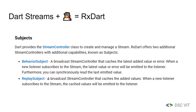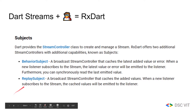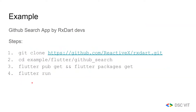RxDart adds two more stream controllers. Dart provides a stream controller, but RxDart adds two more to it. BehaviorSubject only stores the latest value, while ReplaySubject stores everything and returns everything. As an example for this, we're going to use the GitHub search app available on the RxDart GitHub repo.